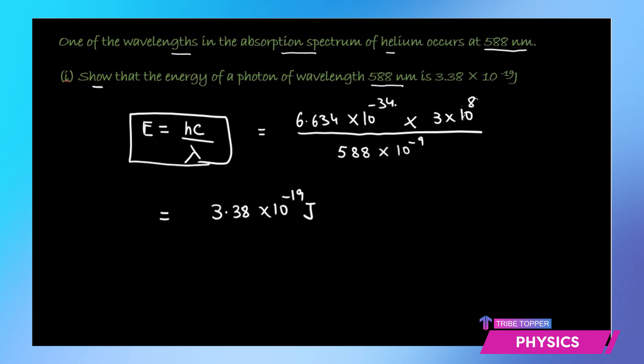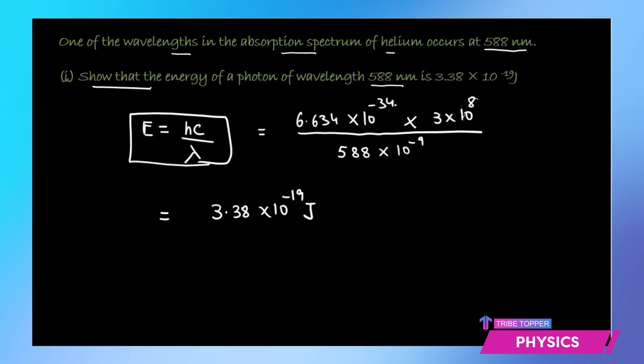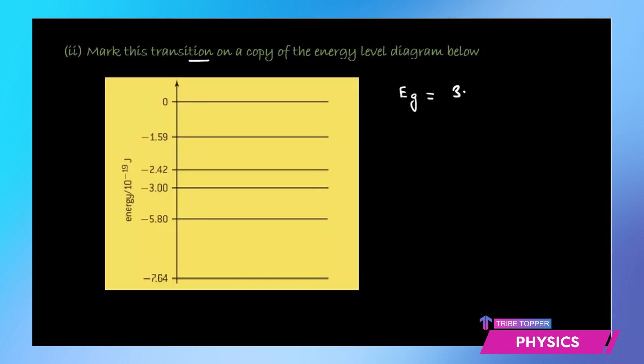So we have proved the first part. The second part of the question says mark the corresponding transition on this energy level diagram. First we need to figure out that this energy gap which we got is equivalent to the corresponding photon that has been emitted having energy of 3.38 into 10 raised to the power minus 19 joules.